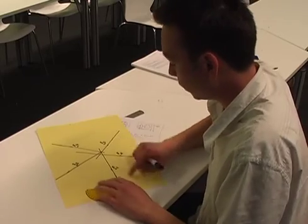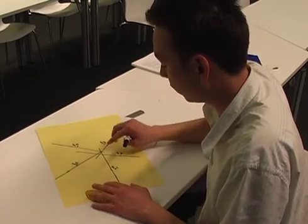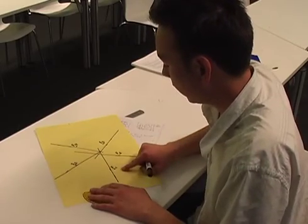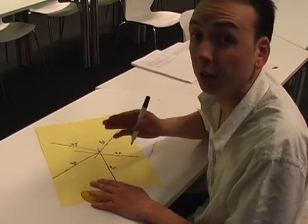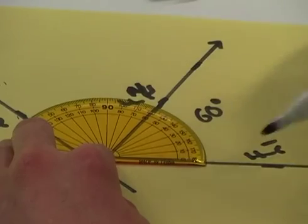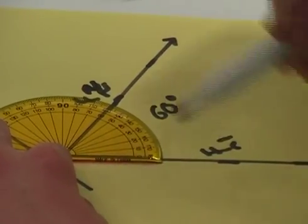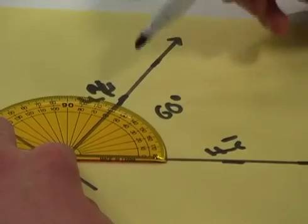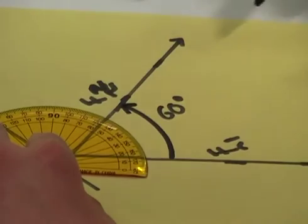For force one, the direction is acting in the vertical direction and we can say that's zero degrees. Measuring the angle of force two in comparison to the vertical axis, you simply measure from the vertical axis the direction of force two and make that angle, and that's approximately 60 degrees.